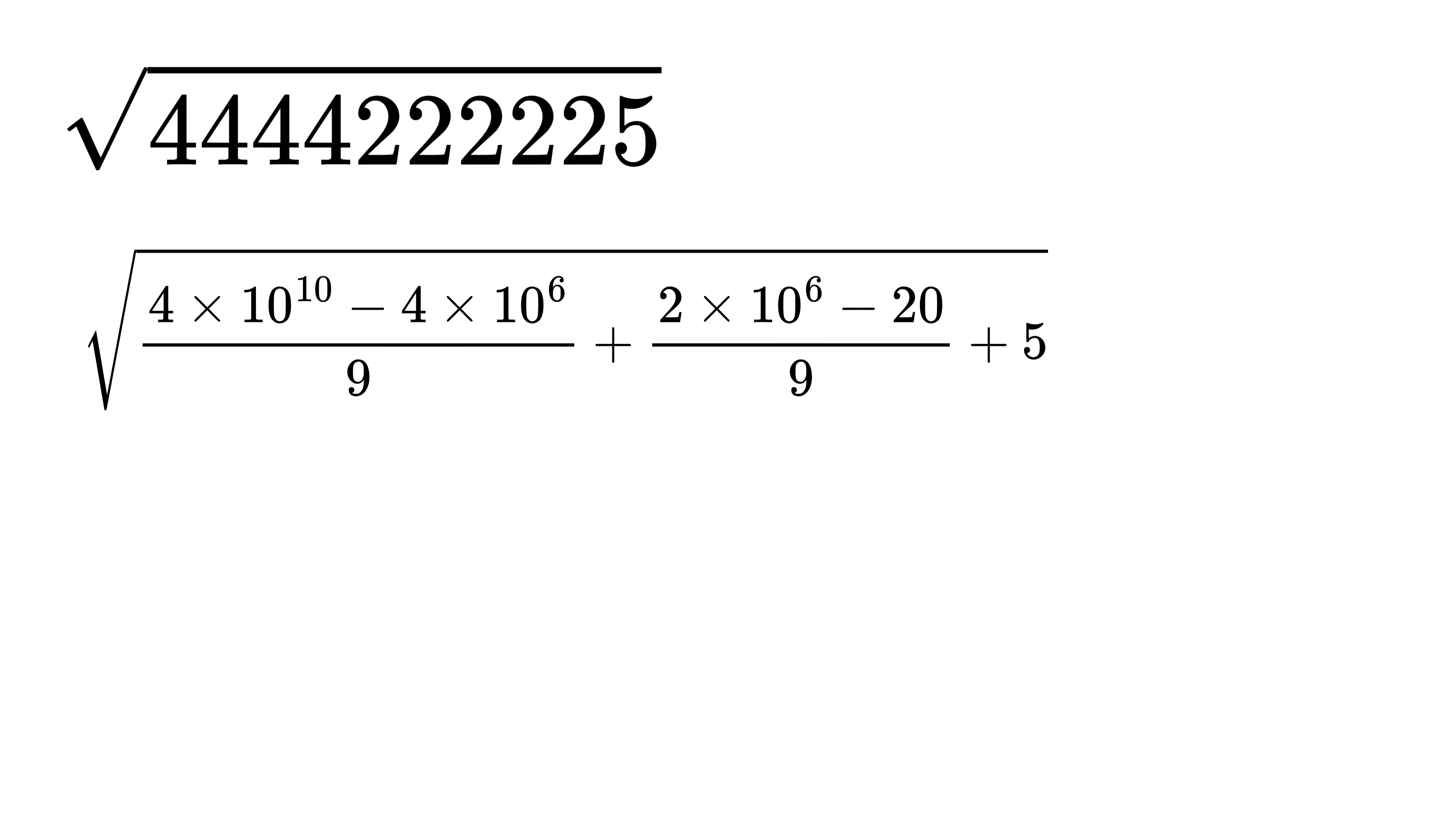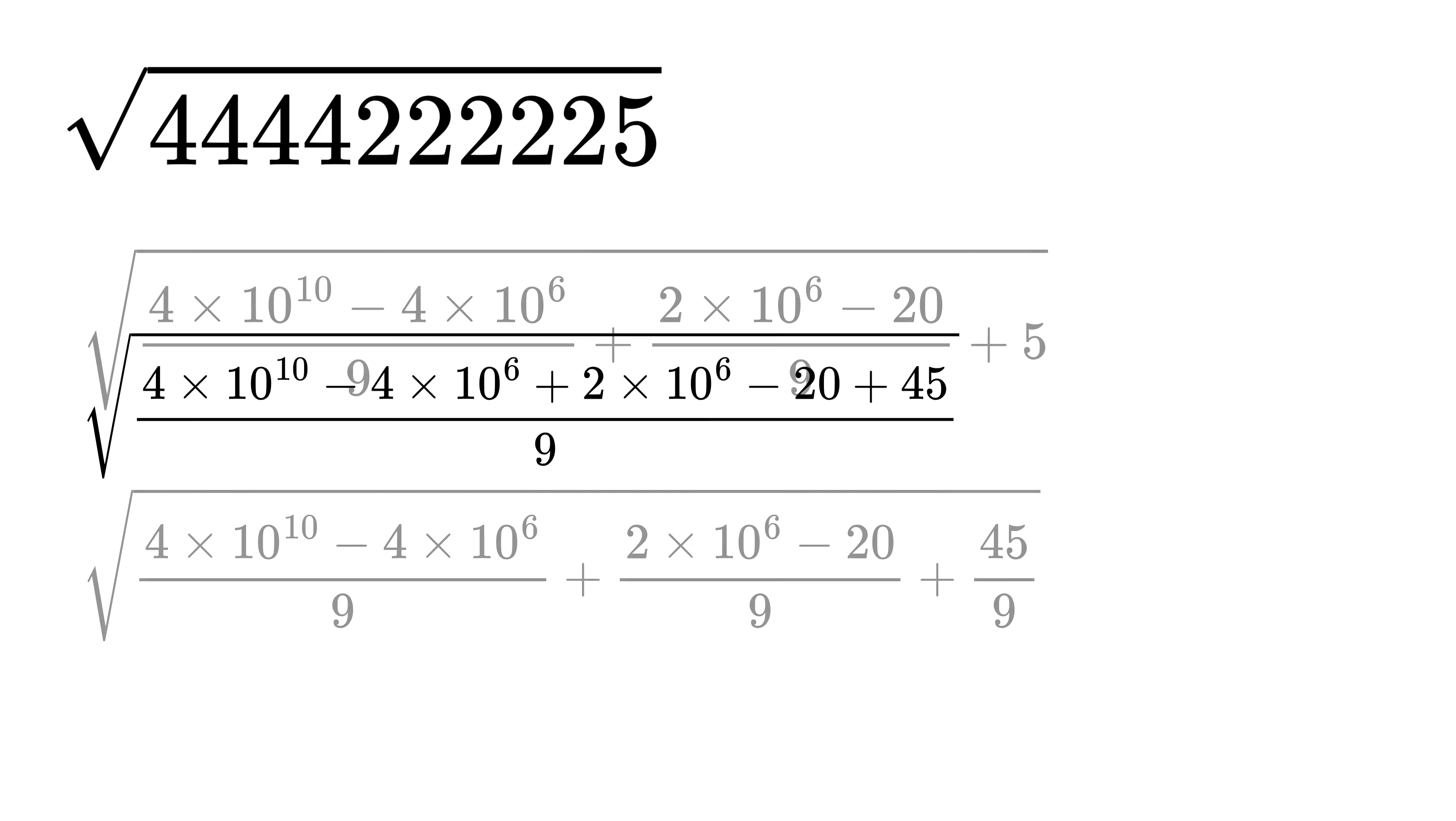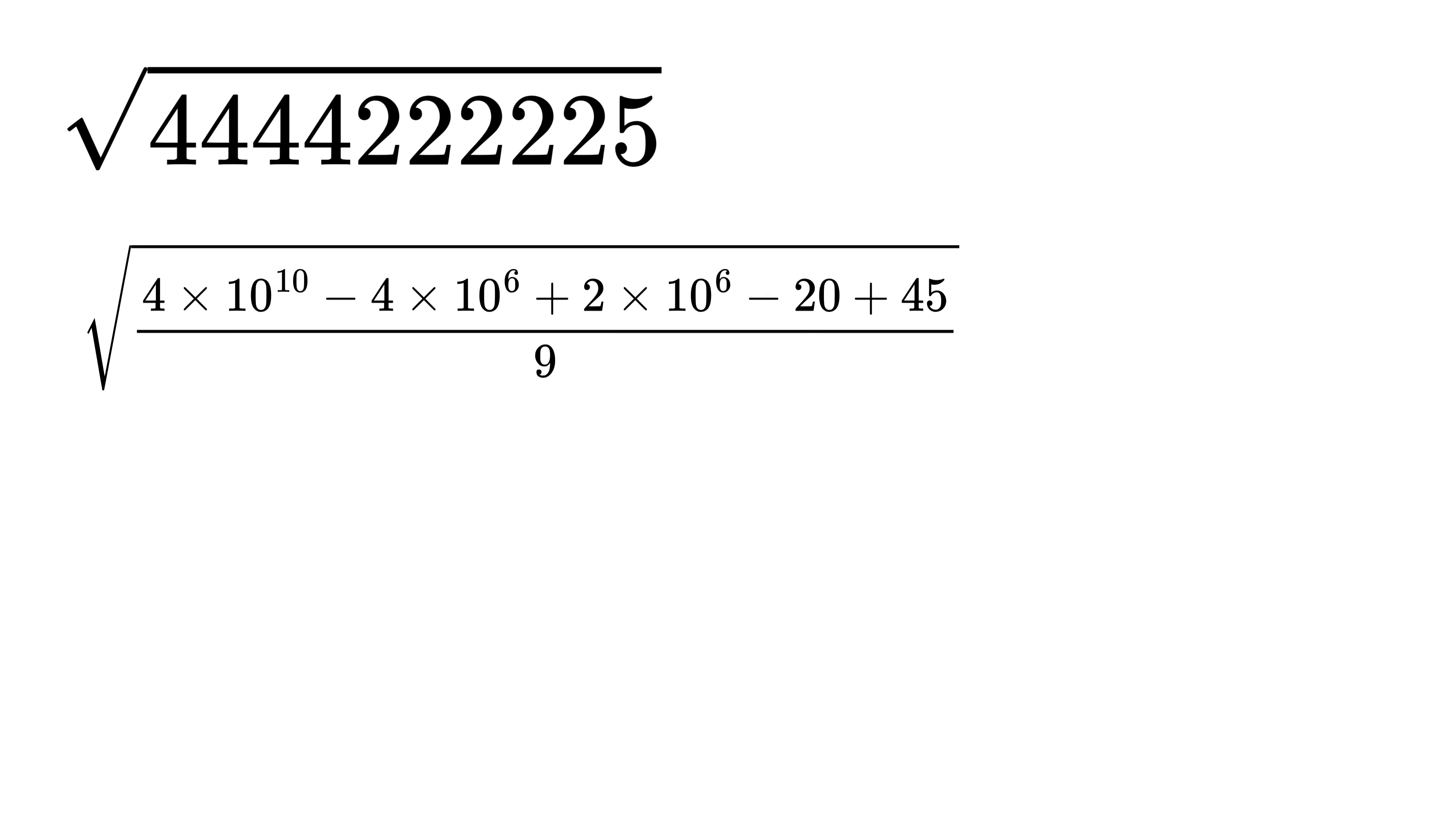Next we will make this denominator common for all by writing this five as 45 divided by nine, so now we can keep all of them under one denominator. Now this 45 minus 20 is 25.